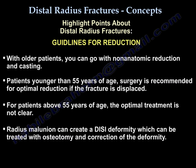With older patients, you can proceed with non-anatomic reduction and casting. For patients younger than 55 years of age, surgery is recommended for optimal reduction if the fracture is displaced. For patients above the age of 55, the optimal treatment is not clear; however, surgery is preferred if the fracture is displaced. A radius malunion can create a wrist deformity, which can be treated with osteotomy and correction of the deformity.